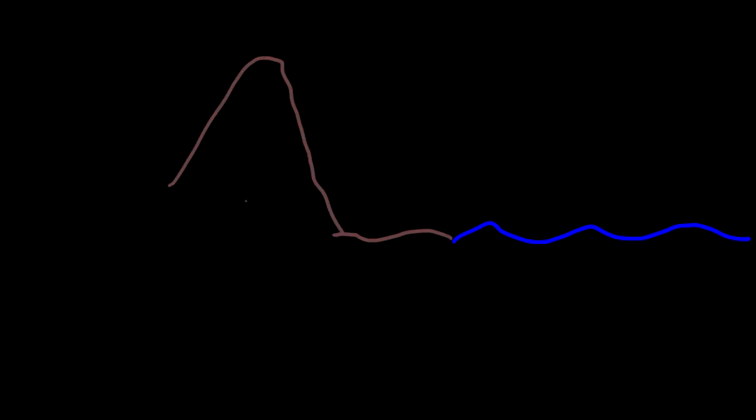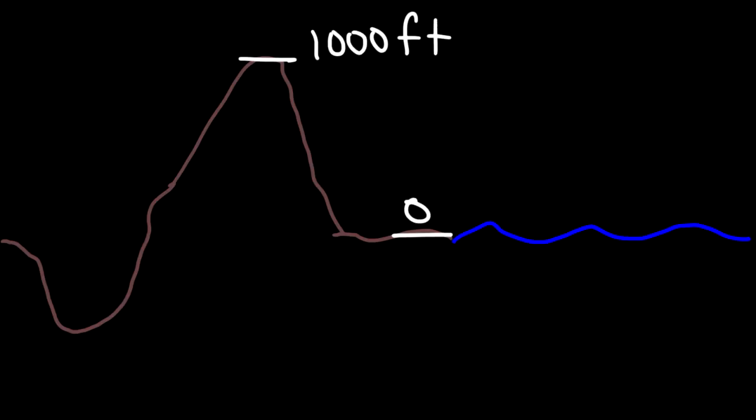Another way we can illustrate this concept is elevation. Let's say this is sea level — this is the ground level, here we have a mountain, and here we have a valley. At sea level, the elevation is zero. At the mountain, the elevation is 1,000 feet. We assign a positive value because sea level is our reference level — our elevation of zero.